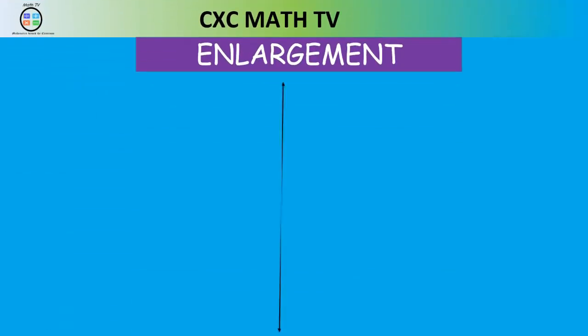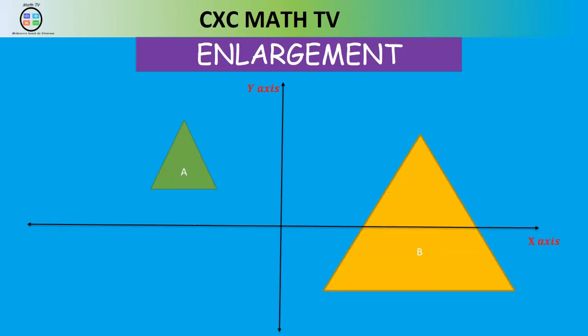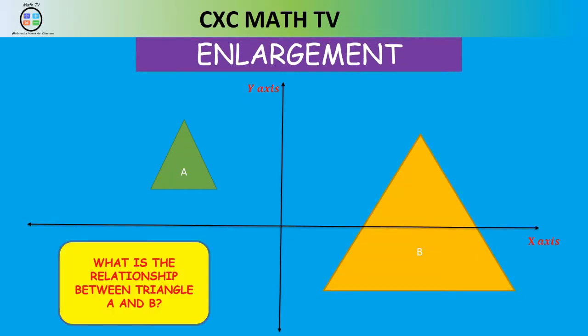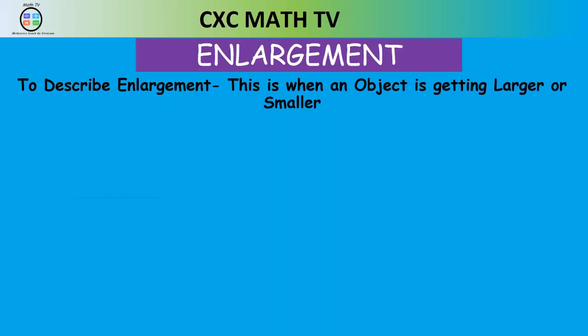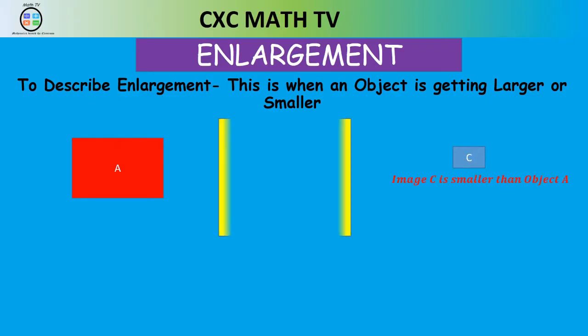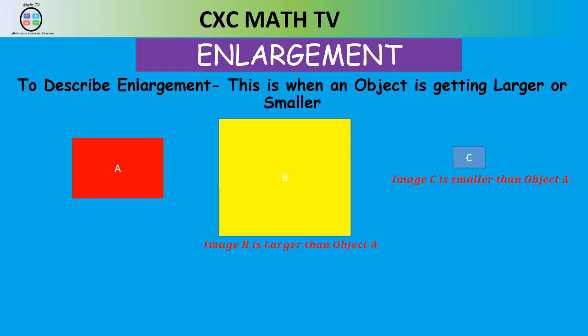Consider this diagram right here. We have triangle A and triangle B. The relationship between them is enlargement — this is when an object gets larger or smaller. Look at that red rectangle: that is object A. B is an image larger than object A, and C is an image smaller than object A.